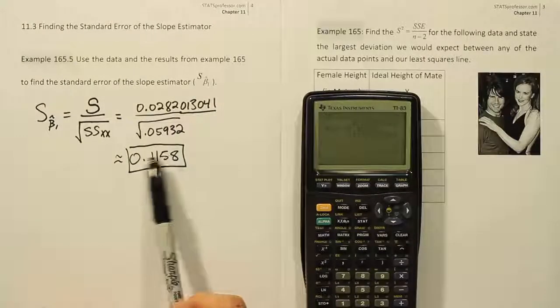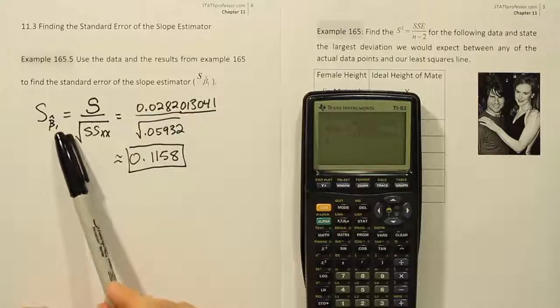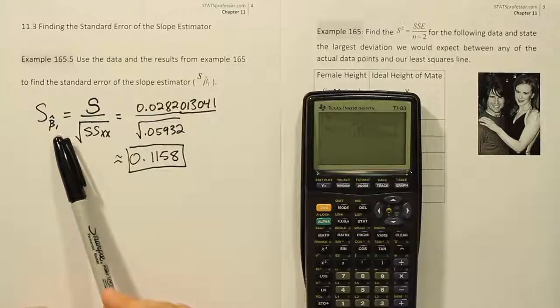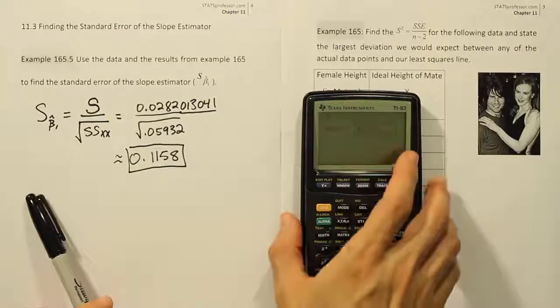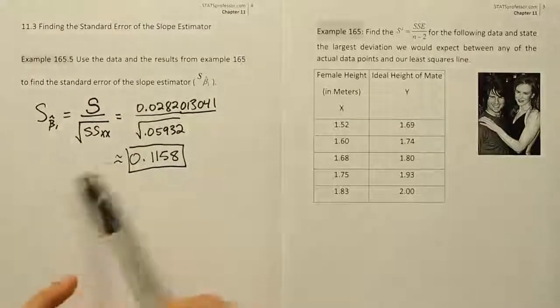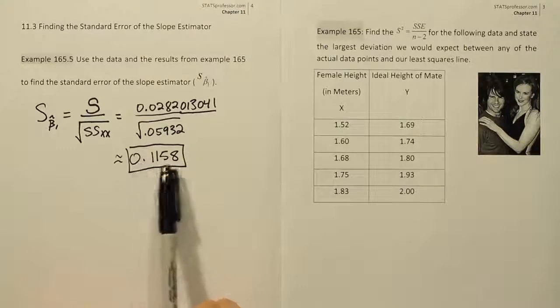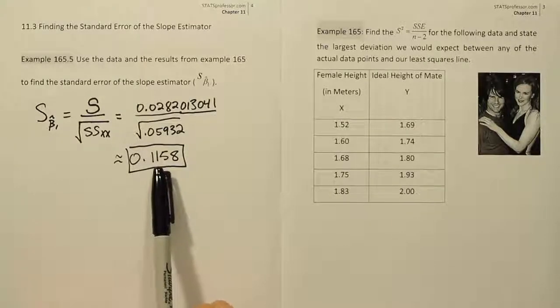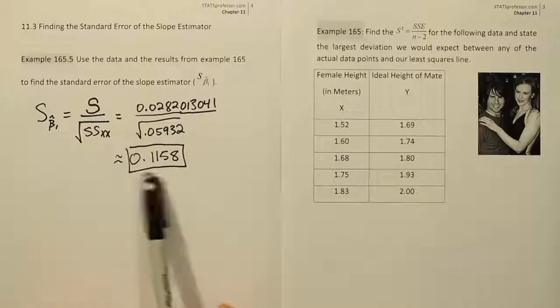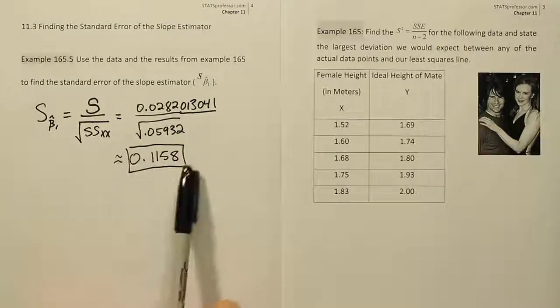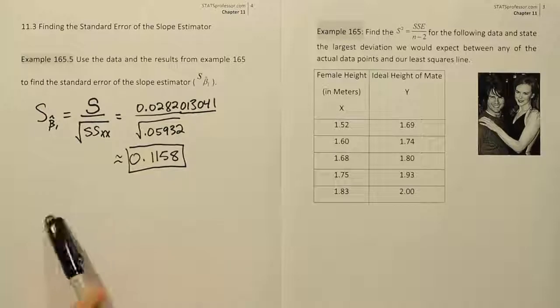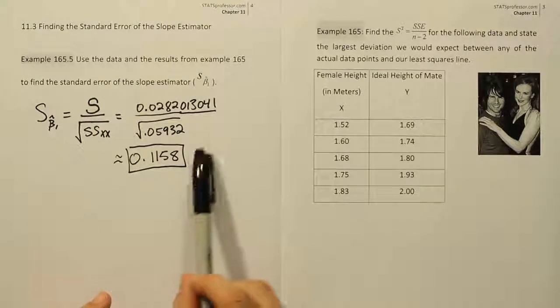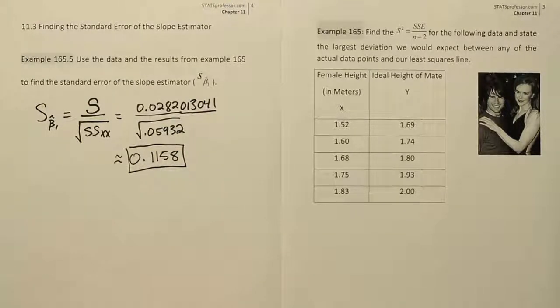In plain terms it essentially tells you how this estimator varies, so for different samples of data you will get different beta 1 hats because the data is different, right? But the amount that it varies by is not so great, you'll have a little bit of variation basically. .1158 is the standard error or the typical deviation that you get when you calculate this estimator beta 1 hat and that's essentially what it is. We've calculated, we've explained the interpretation and we've finished.